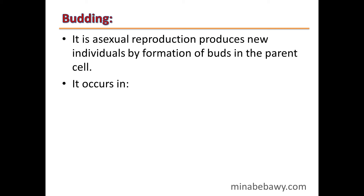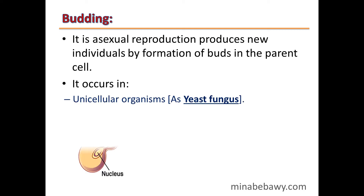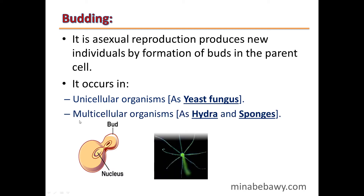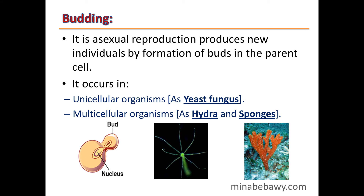Budding is an asexual reproduction process that produces new individuals by the formation of buds in the parent cell. It occurs in unicellular organisms such as yeast fungus, and also in multicellular organisms such as hydra and sponges.